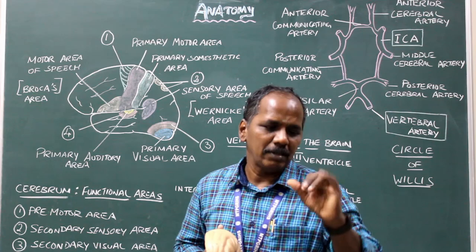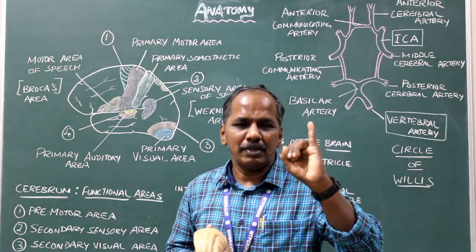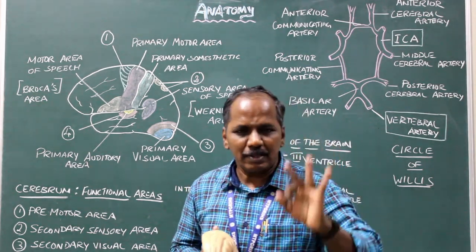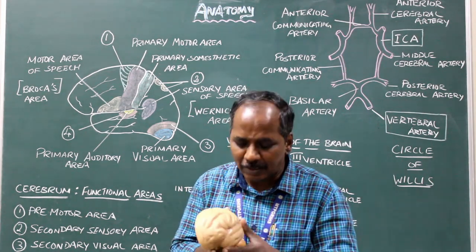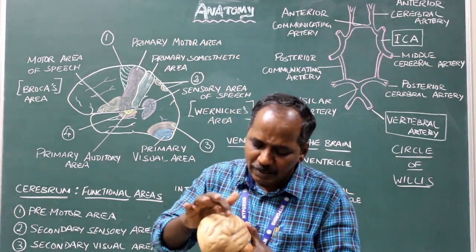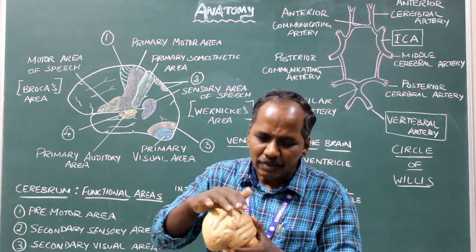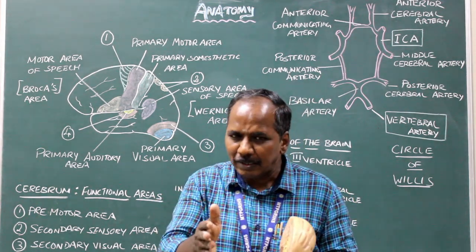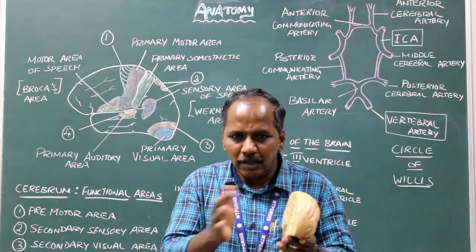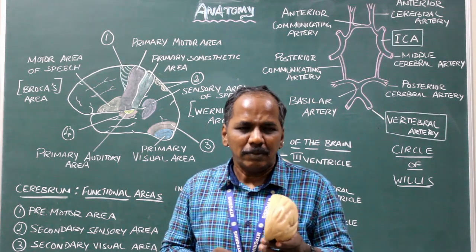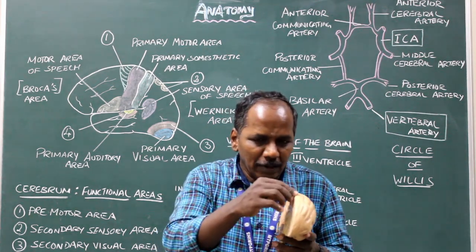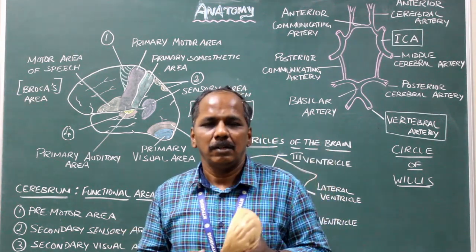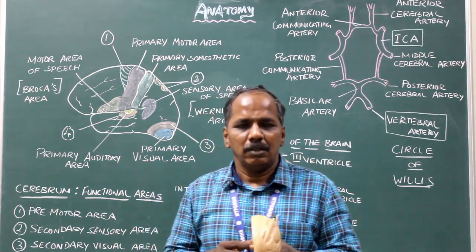In summary, there are three types of fibers: association fibers, which connect gyri present in the same hemisphere; commissural fibers, which connect the two cerebral hemispheres; and projection fibers, which connect the cerebral cortex to the subcortical areas or the spinal cord.